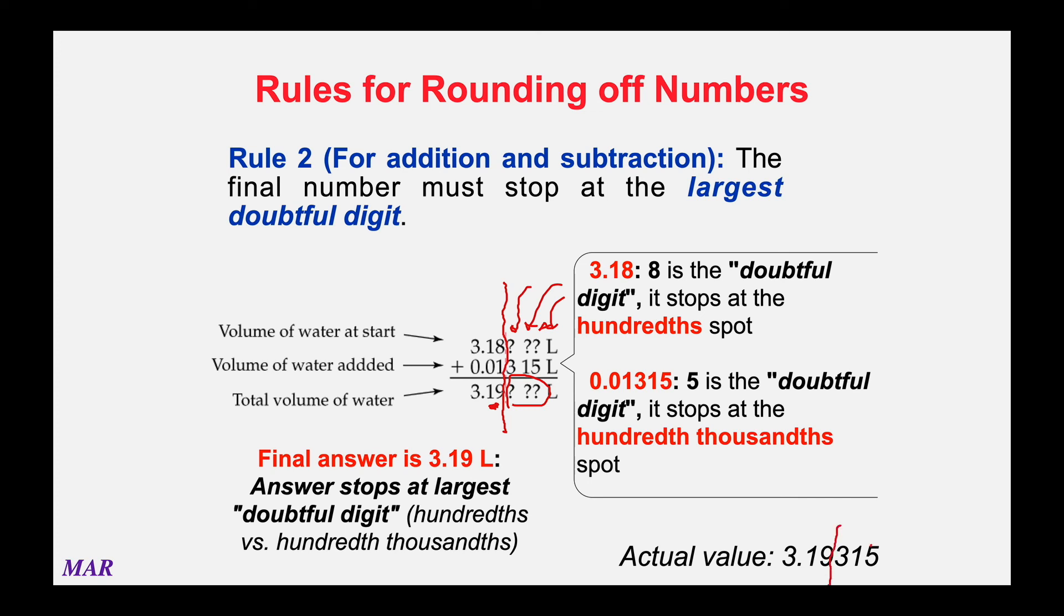We're cutting it off at the larger doubtful digit, 3.19. So adding and subtracting is a little strange. You want to use the larger doubtful digit to cut off your answers for them. So even though in that second number, 0.01315, we had all kinds of significant figures, we're going to cut it off at the hundredth spot to 3.19. Work a little bit on adding and subtracting and sig figs. Sometimes people get a little stuck on it. It's not hard. You just need a little practice.